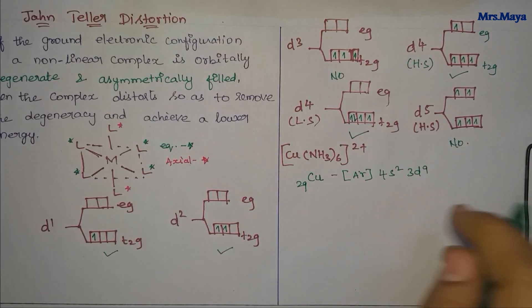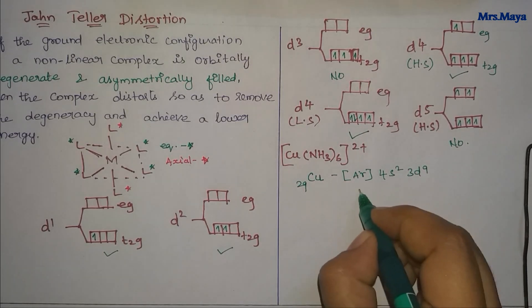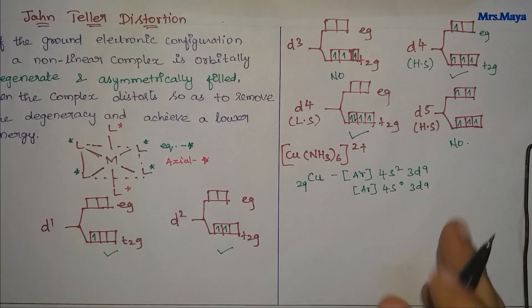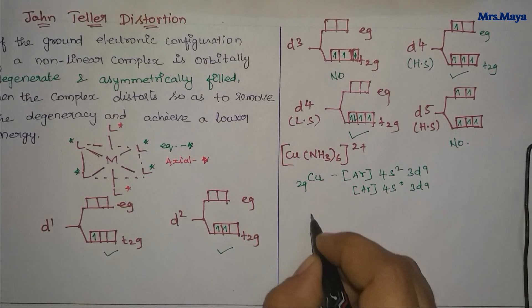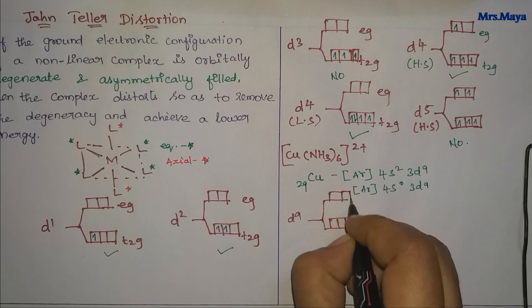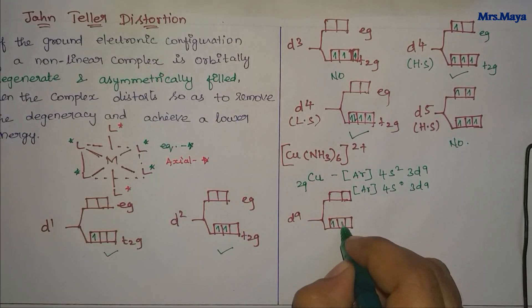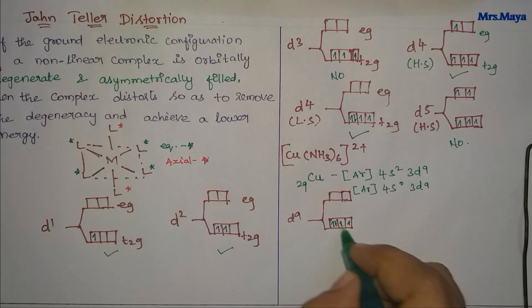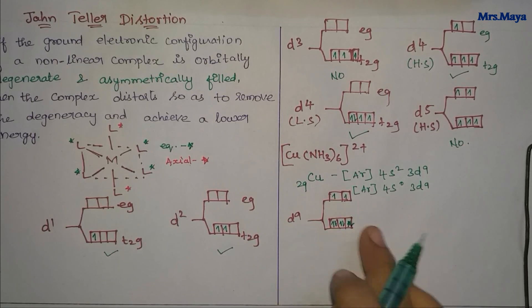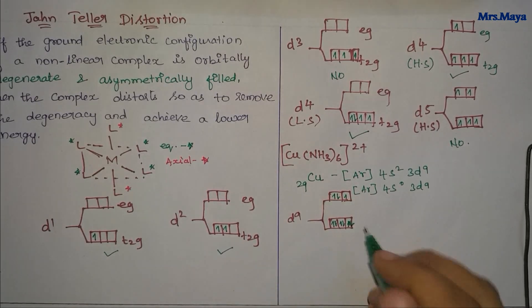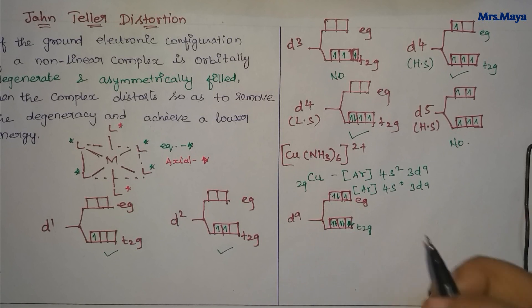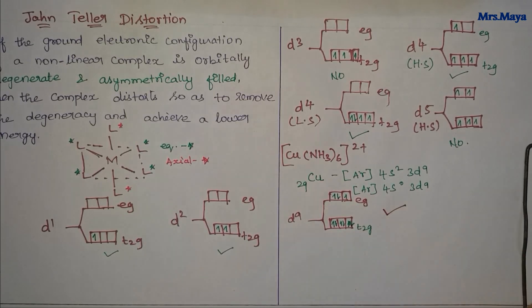The D9 system has the orbital split into T2G and EG. Electron filling is 9 electrons: 1, 2, 3 — fill the orbital units to maximum. T2G gets 6 electrons (fully filled), and the remaining electrons are 7, 8, and 9. The T2G set of orbitals is symmetric, but in the EG set of orbitals there is asymmetric filling. So for the copper complex, you can see the distortion.